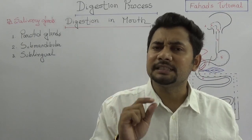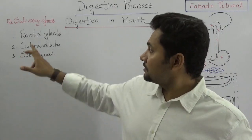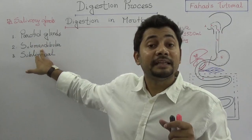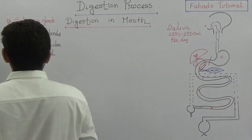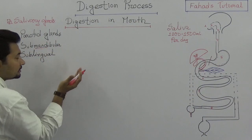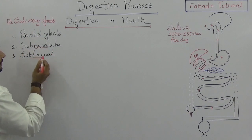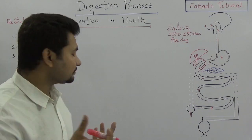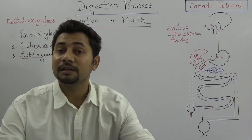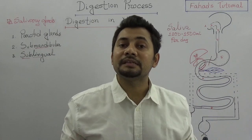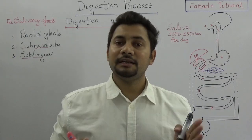We have three pairs of salivary glands and their secretion is known as saliva. In saliva there are some enzymes which initiate the digestive process. We have the parotid gland, the sub-mandibular gland, and the sub-lingual gland. The sub-mandibular gland is situated just below the mandible, and that is why it's called sub-mandibular. Lingual means tongue, so the gland situated just below the tongue is known as the sub-lingual gland.